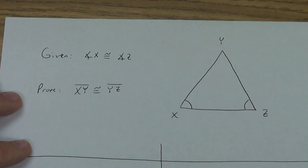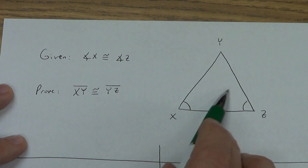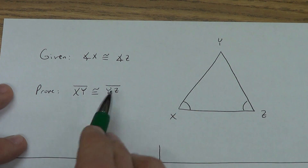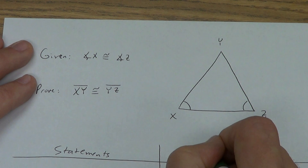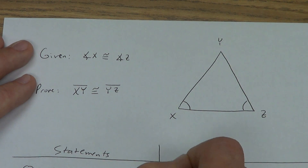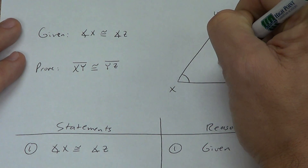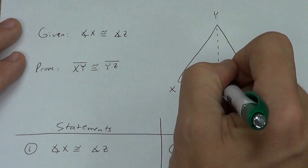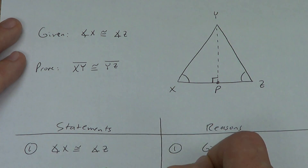Now let's do the converse. We have triangle XYZ. Angle X is congruent to angle Z — we start with the angles this time and work up to the sides. Working across: YZ is congruent to XY — that's what we want to prove. Statements and reasons: angle X is congruent to angle Z, given. Same as before, there must be a segment from Y perpendicular to XZ. I'll call that point P again. YP is perpendicular to XZ by the perpendicular postulate.